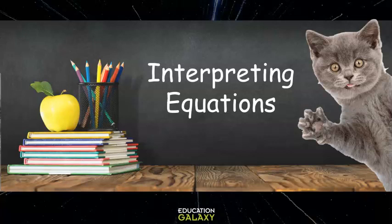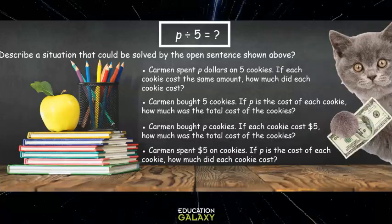Now let's try interpreting equations. Here, we have P divided by 5 equals question mark. Describe a situation that can be solved by the open sentence shown above. Well, a situation that would be appropriate for this question would be one in which it starts with the value P, an unknown, and that value gets divided, split up, distributed, into 5 equal groups to get an answer.